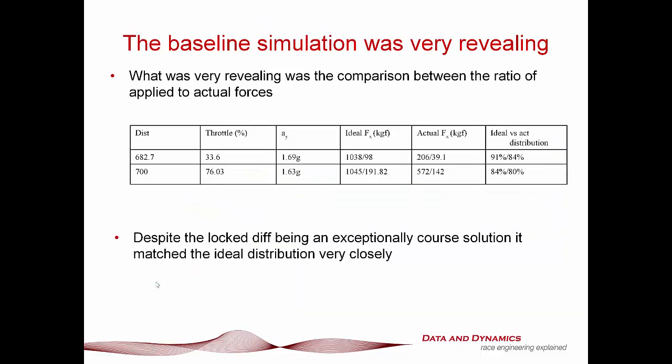So what we did was we took the existing locked diff model and ran a simulation. And the results of the simulation are shown here. And what I did was looked at turn one at Willowbank, which is a very high speed turn. We've got a mid corner speed of about 155.9k an hour. But where things get really interesting is these two channels down here, where we've got the tractive forces applied at the contact patch and the maximum possible longitudinal forces that are available from the tyre.